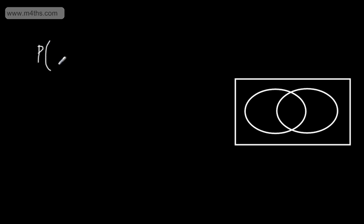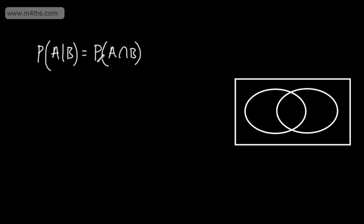In this video, we're going to look at conditional probability and consider the probability of an event happening given another has already occurred. We can use the formula: the probability of A given B is equal to the probability of A intersection B divided by the probability of B.